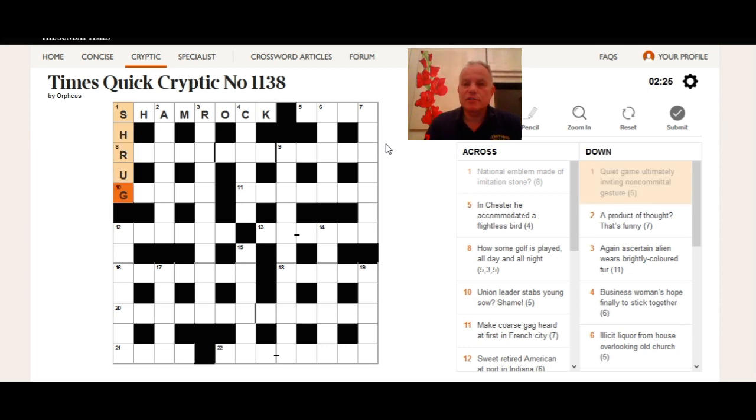Ultimately inviting gives you the G. So a non-committal gesture is shh plus RU plus G. Shrug.